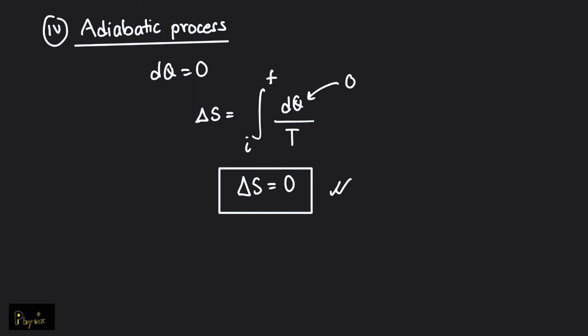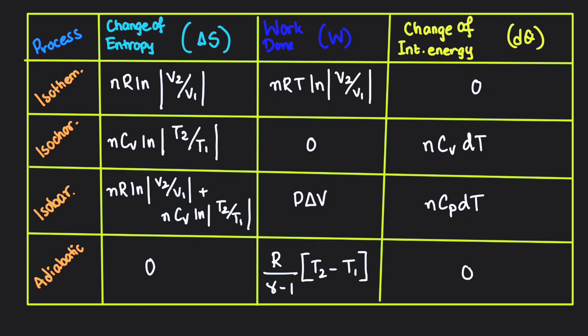These are the four thermodynamic processes and their mathematical expressions deriving their change of entropies. Here is a chart showing the different expressions for the change of entropy, the work done, and the change of internal energies of the different processes in a thermodynamic system. If you can remember this, it will help you in exams.